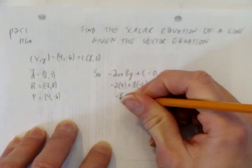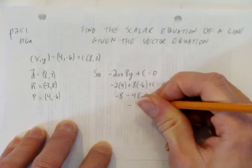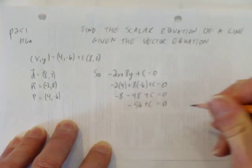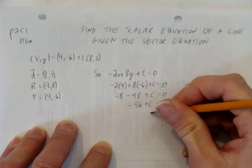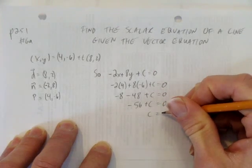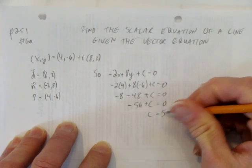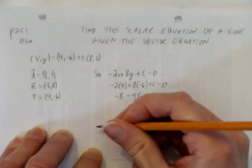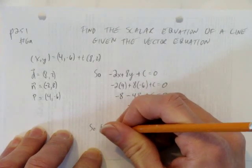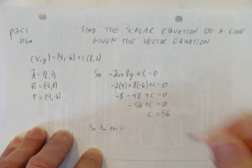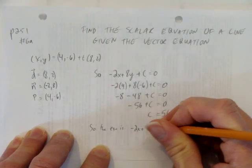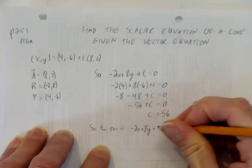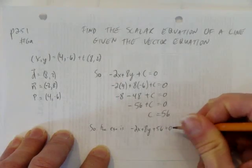So, we have negative 8 minus 48. That's negative 56 plus c equals 0. And we'll move it to the other side or add it to both sides. And we get that c is 56. So, we have the equation is, and let's write it out, negative 2x plus 8y plus 56 equals 0.